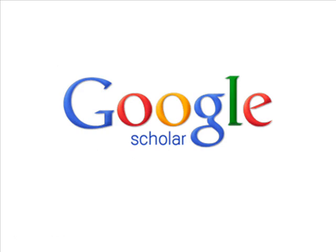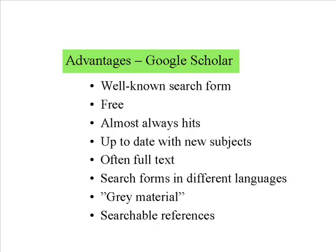Google Scholar is a search tool that limits its contents to webpages from the world of science and university. The results from a search differ from ordinary Google. The search in Google Scholar is performed in mechanically produced content, and there's a well-known search form. It's free of charge, and almost always returns hits, but the number of hits can be large and irrelevant.